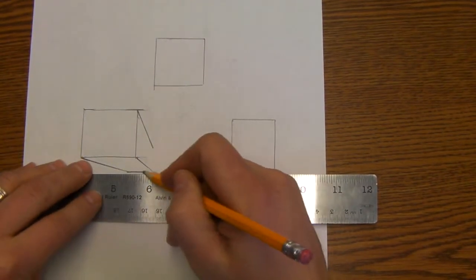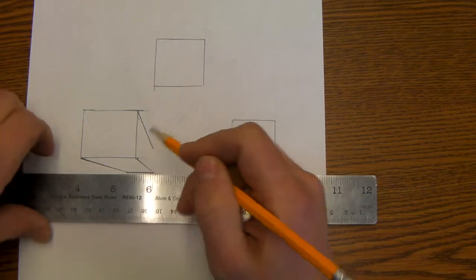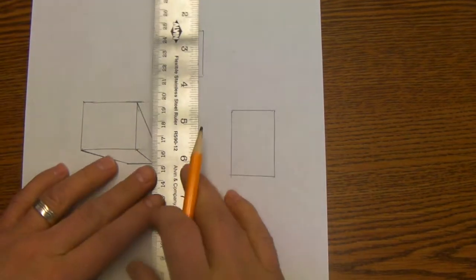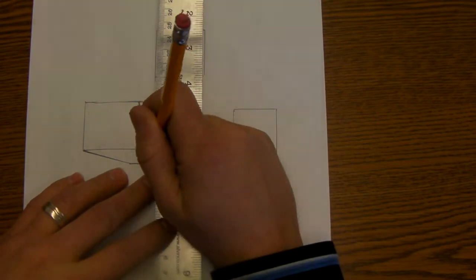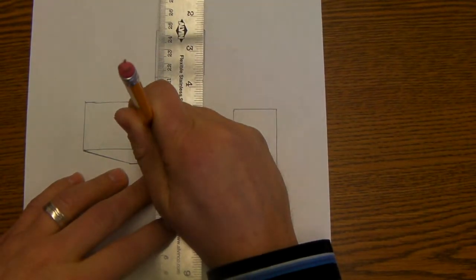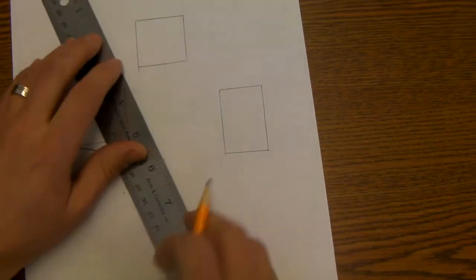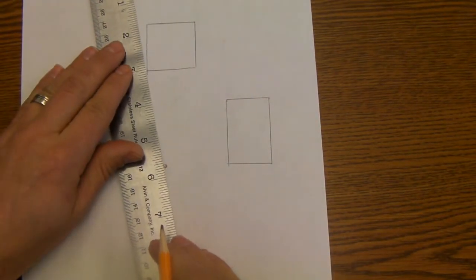We're going to connect these lines. Make sure your ruler is parallel to the square. Just like that. Now repeat that process to the other two shapes.